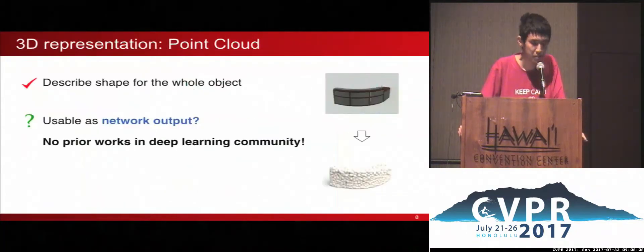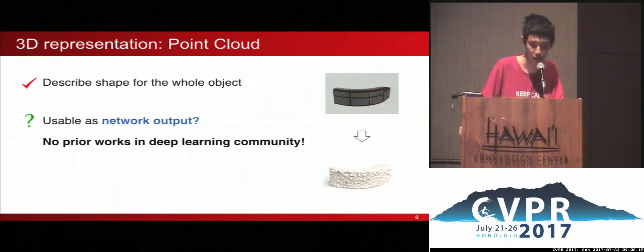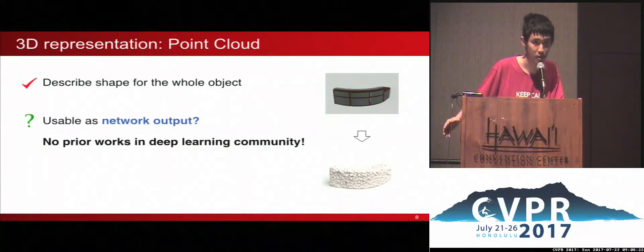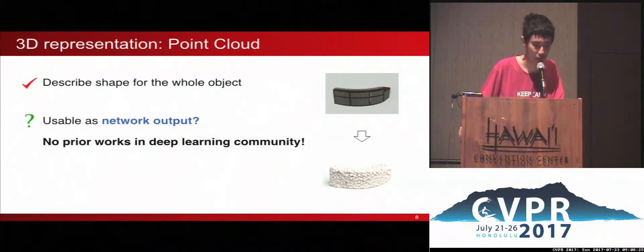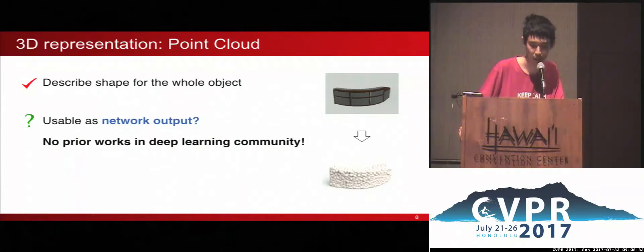This method may seem simple, but there is one core issue: how should we represent a 3D object in a neural network? First, the representation must be powerful enough to describe objects of all kinds — not only simple ball-like or flat shapes. And also, it must be useful as a network output, meaning we must be able to back-propagate through this kind of representation. This kind of problem has not been discussed thoroughly in the deep learning community.